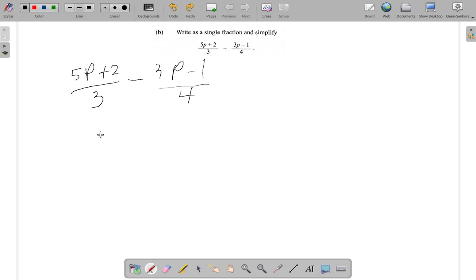Now you can do this using the LCM. Draw the line, find the LCM. It's 3 times 4, which is 12. 3 into 12 goes 4 times, 4 times all of this at the top.